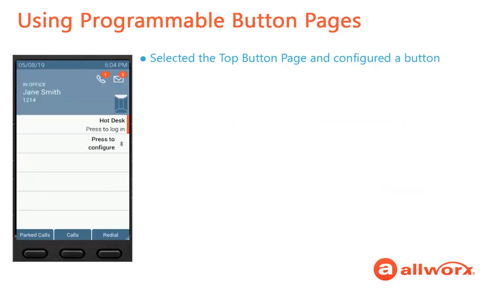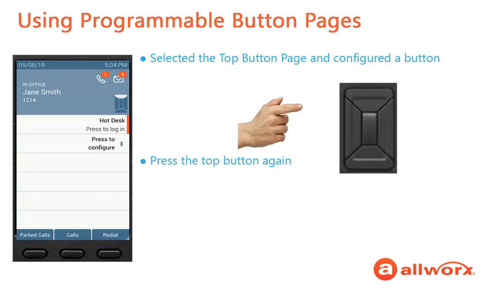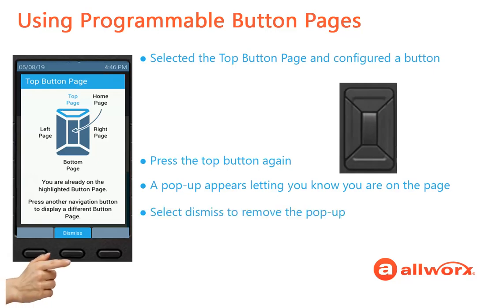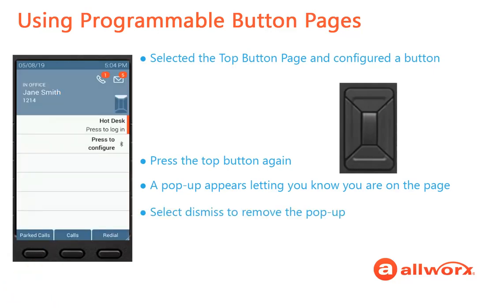In the previous example, you selected the top button page and configured a button. If you are already on a button page and select the navigation pad for that page — in this example, the top page — a pop-up will appear to let you know that you are already on the highlighted button page. Select Dismiss to remove the pop-up window.